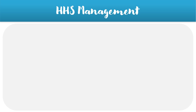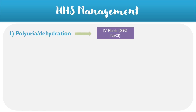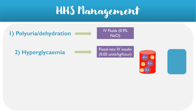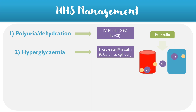For the management of HHS, it's important to treat the dehydration symptoms first, usually by starting IV fluids such as 0.9% saline to restore the fluid balance of the patient. In terms of the hyperglycemia, patients can be administered a fixed rate IV insulin infusion of 0.05 units per kilogram per hour, which is slightly less than the rate used for diabetic ketoacidosis. The IV insulin is enough to drive glucose back into the cells, along with some potassium ions as a byproduct.